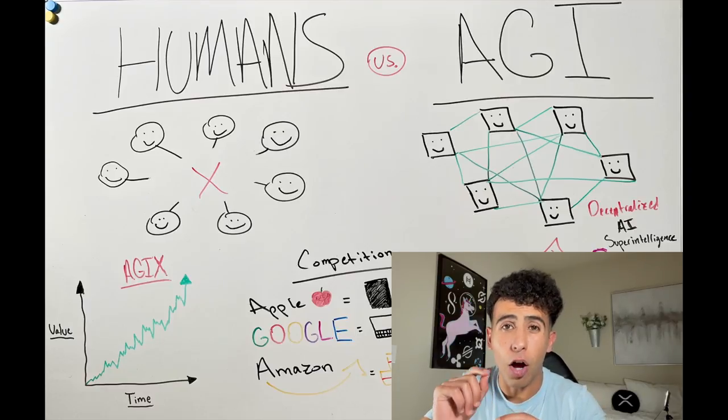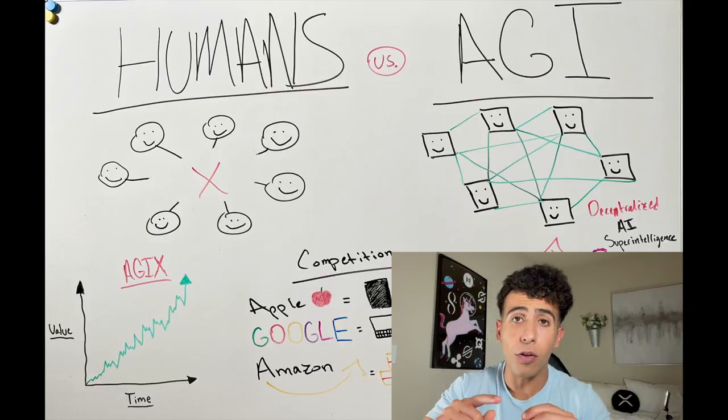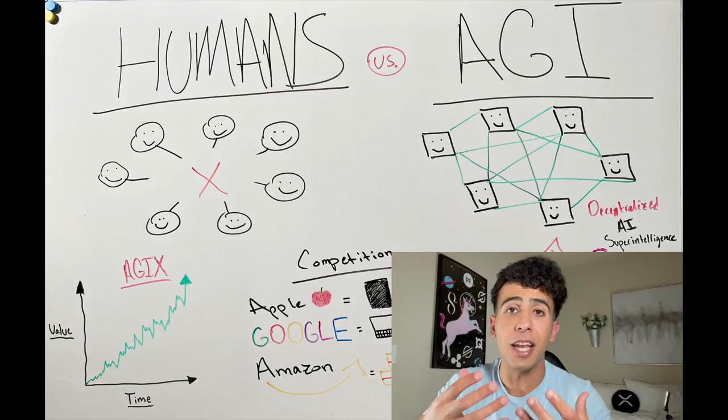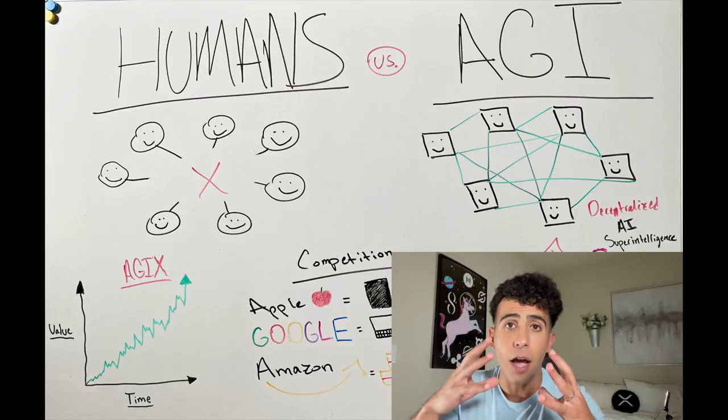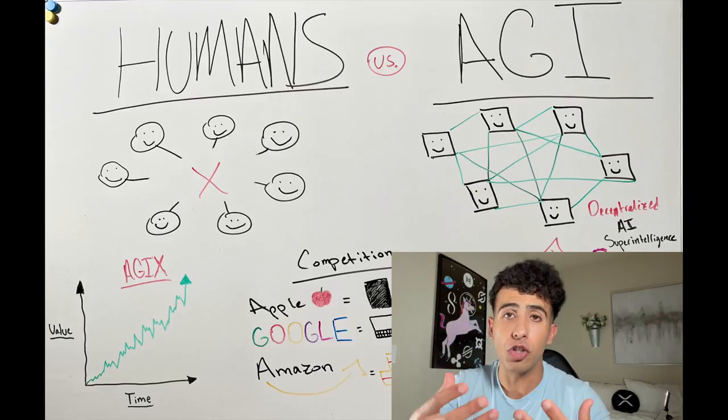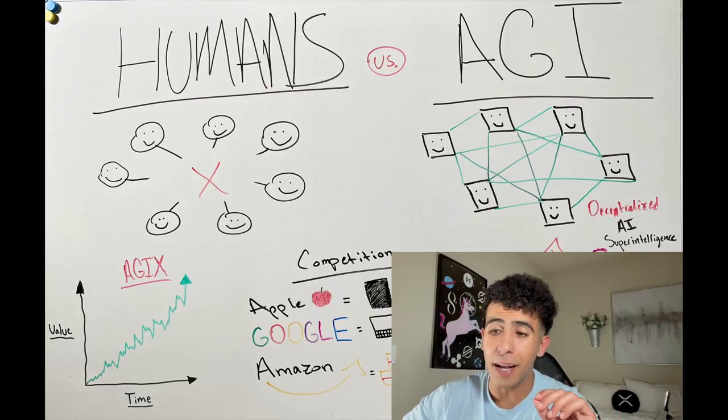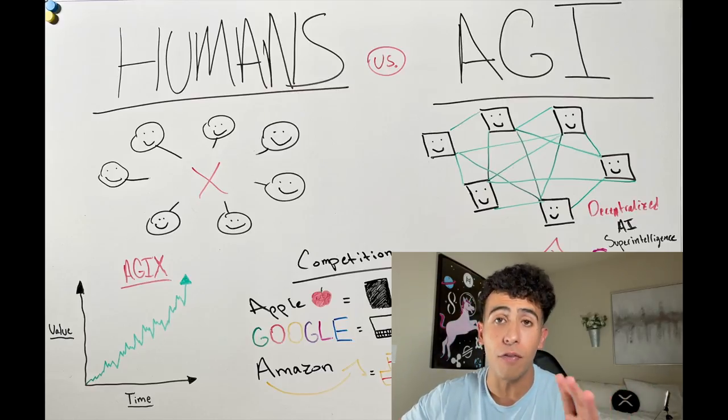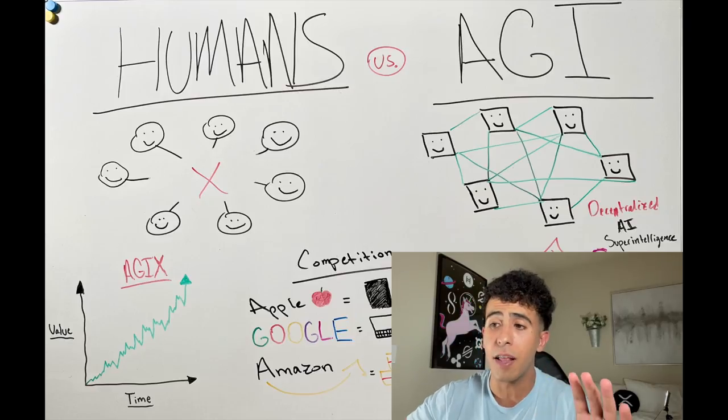What you are seeing on the screen right now is very important if you want to understand SingularityNet and artificial general intelligence and how we will achieve it. I will explain it so it does kind of look confusing at first, but it will make a lot of sense.